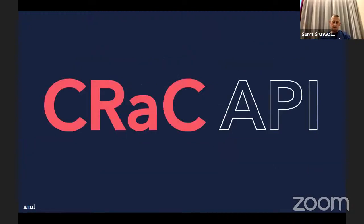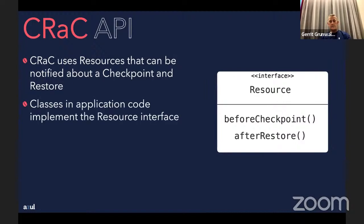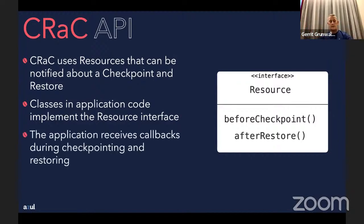The CRaC API is pretty simple — it's just one interface called Resource with two methods: beforeCheckpoint and afterRestore. If you have a class like a database manager, it implements the Resource interface. It will be called before the checkpoint is saved and after it is restored, so in that class you can close the database connection and then reopen it on restore.